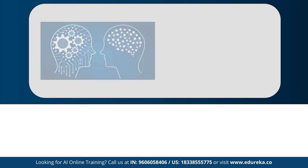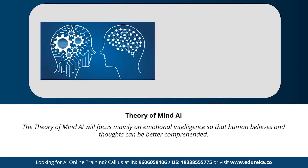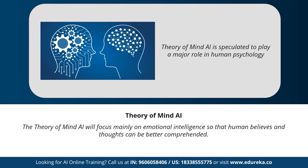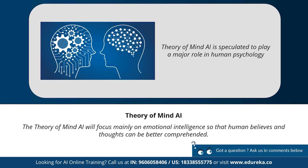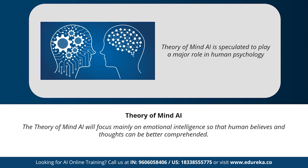Next we have the theory of mind artificial intelligence. The theory of mind AI is a more advanced type of artificial intelligence, speculated to play a very important role in psychology. This type of AI will mainly focus on emotional intelligence so that human beliefs and thoughts can be better comprehended. The theory of mind AI has not been fully developed yet, but rigorous research is happening in this area.